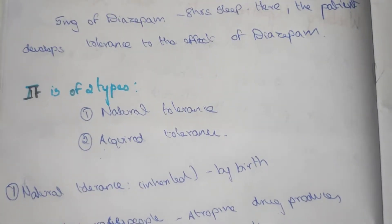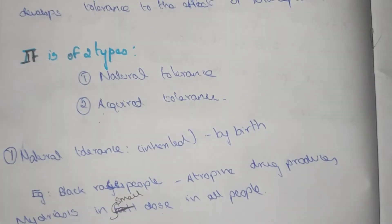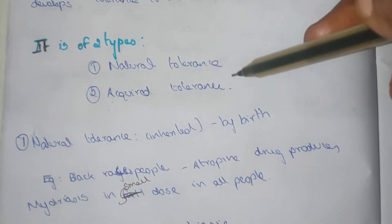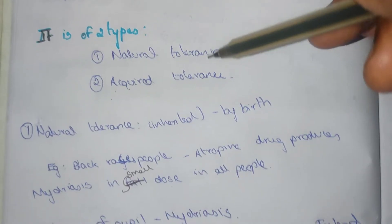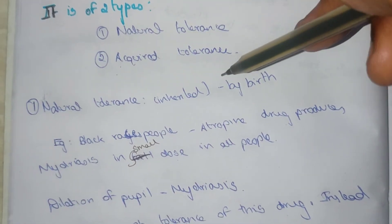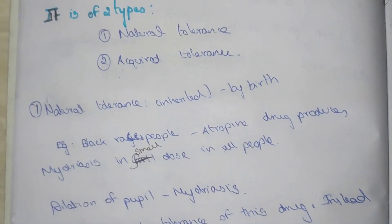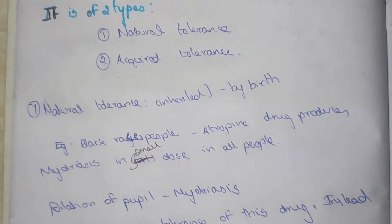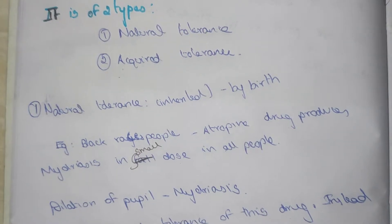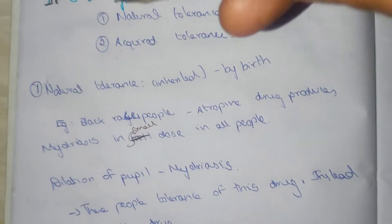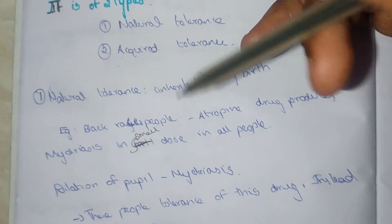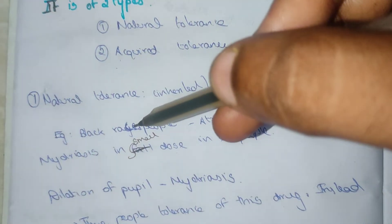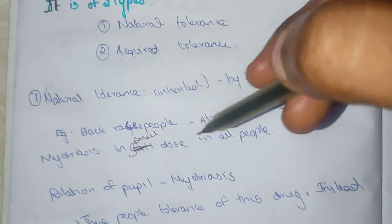Drug tolerance is of two types: one is natural tolerance and another one is acquired tolerance. Natural tolerance is inherited by birth — it is not acquired. For example, in the black race people, atropine normally produces mydriasis in small doses in all people.